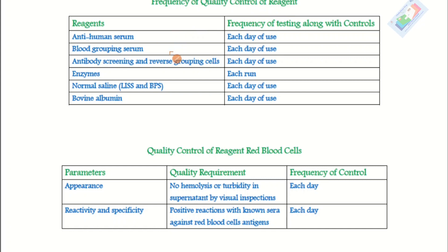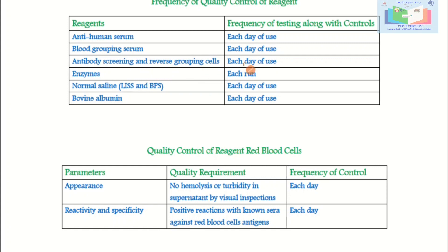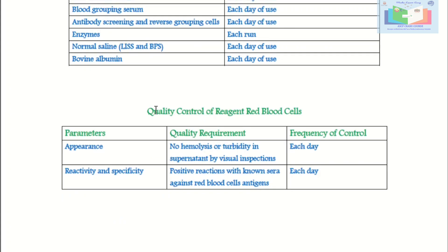Antibody screening and reverse grouping cells should also be checked each day of use. For enzymes, a check is required with each run. Normal saline, LISS, phosphate buffer saline, and bovine albumin also require a check on each day of use.